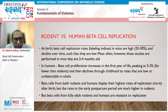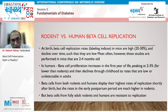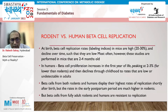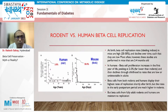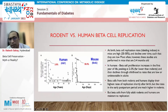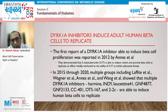Human beta cells versus rodent beta cells differ significantly. Rodent beta cells have higher proliferation rates in early and later years of life compared to human beta cells. In human beta cells, the highest proliferation rates of about 2-3% are seen only in the first year of life, declining quite significantly after that. In mouse models, proliferation rates of about 50% are seen in early life.